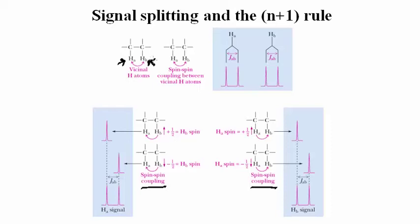Across the population of molecules in a sample, there will be similar numbers of molecules having each spin alignment for HB. The result is that the signal for the HA atom appears in the spectrum as a doublet. In this hypothetical example, the signal for HB is also split into a similar doublet owing to HA because the effect operates in both directions.